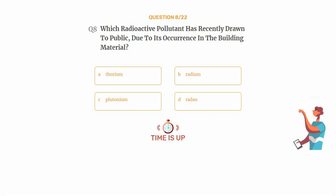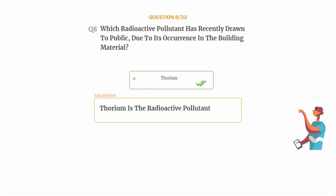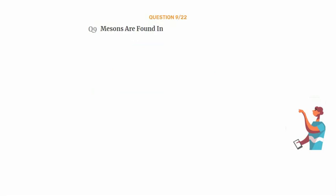The correct answer is Option A: Thorium. Thorium is the radioactive pollutant.